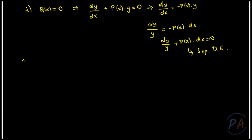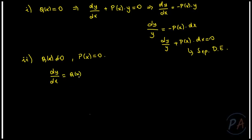In Case 2, let's assume that Q(x) is not equal to 0 but P(x) equals 0. The differential equation reduces to dy minus Q(x) times dx equals 0. This equation is also separable in the variable, so it can be easily solved by integrating both sides.